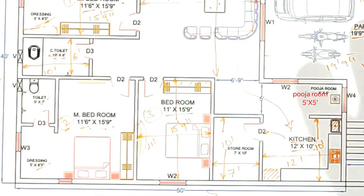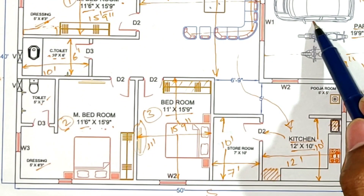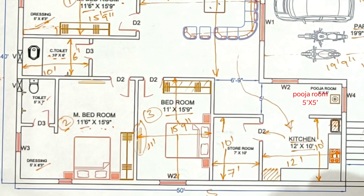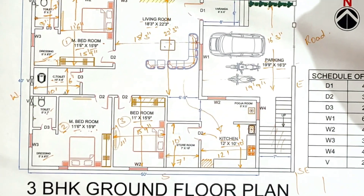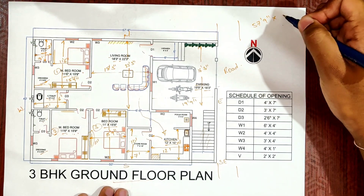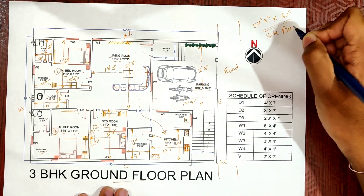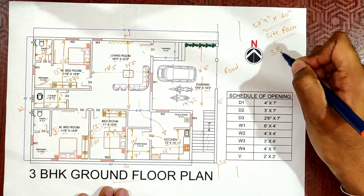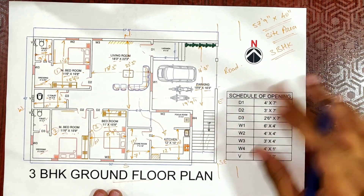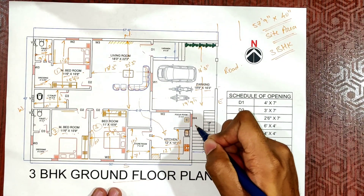These are our client's requirements. If you have a car and two or four bikes, there is parking space provided. The total site area is 57 feet 9 inches by 40 feet. In this area, we have set a plan for the 3BHK house, including a staircase and utility areas.